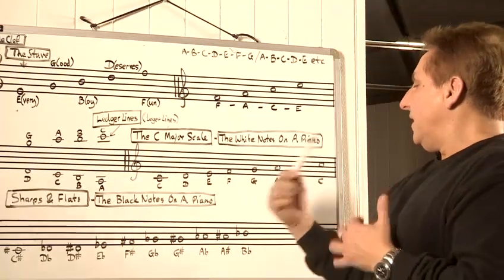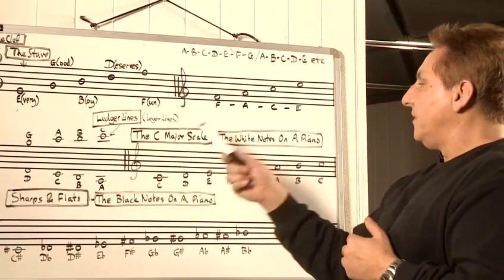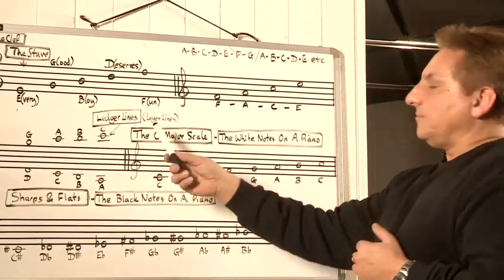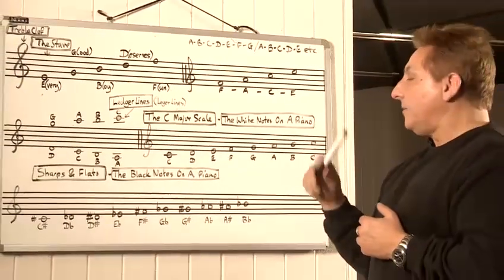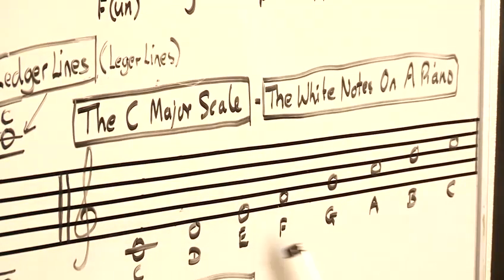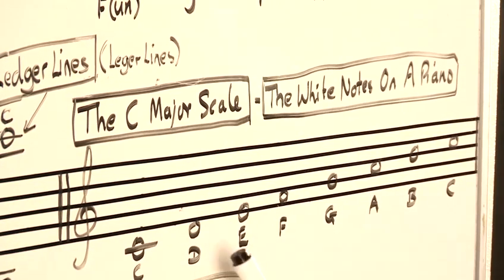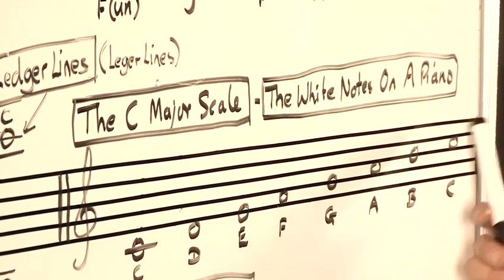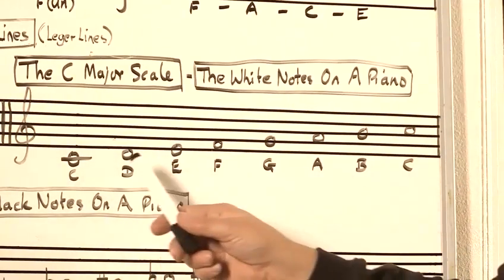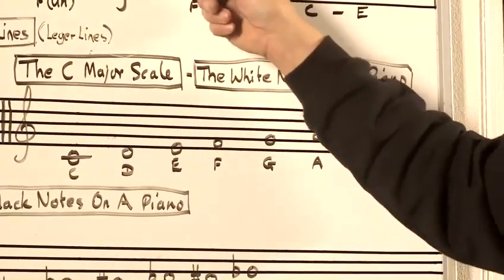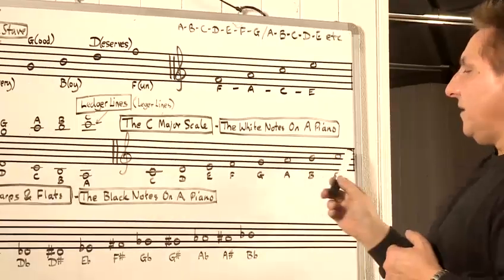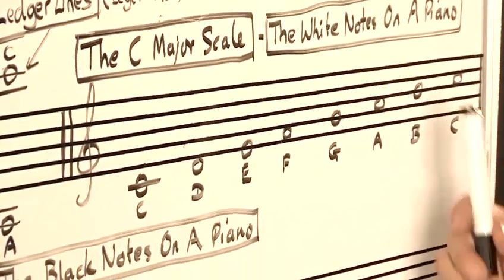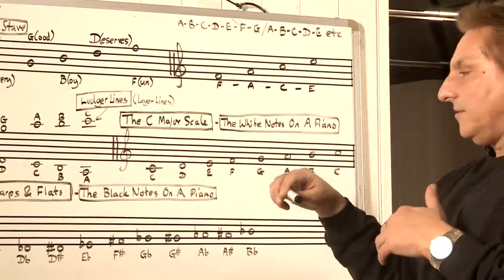So the next thing is scales. The basic scale is the C major scale, which is the white notes on a piano. So this would start here — as we've seen, C is here — and it goes C, D, E, F, G, A, B, C. So you go through the alphabet starting on C, and that would be all the white notes from C to C on the piano, with no black notes.